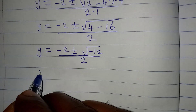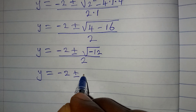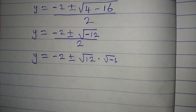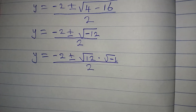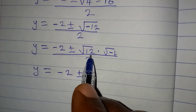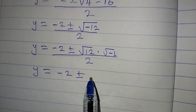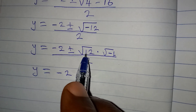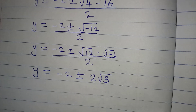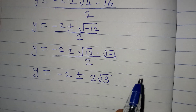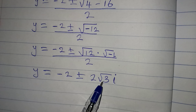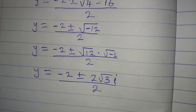We separate the negative: y equals minus 2 plus or minus the square root of 12 times the square root of negative 1, over 2. Now 12 equals 4 times 3, and the square root of 4 is 2, so the square root of 12 is 2 root 3. The square root of negative 1 gives i, and i is not under the square root.